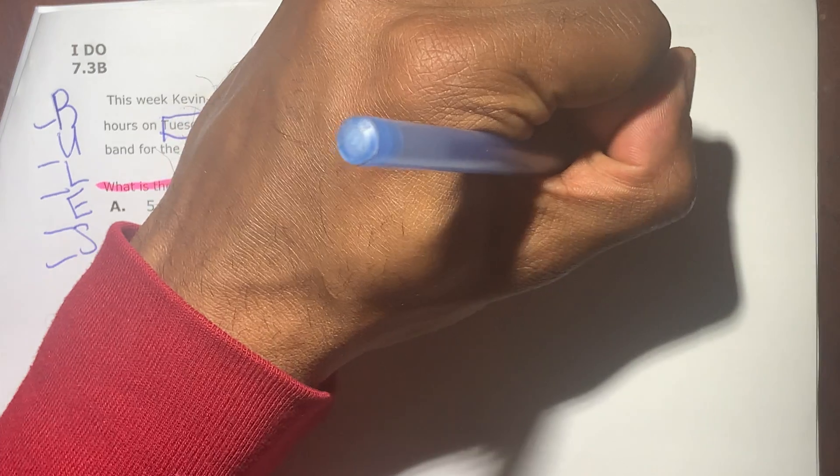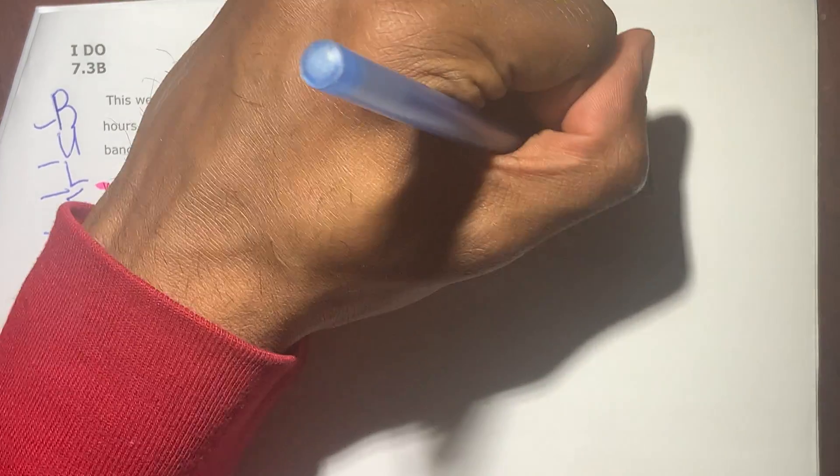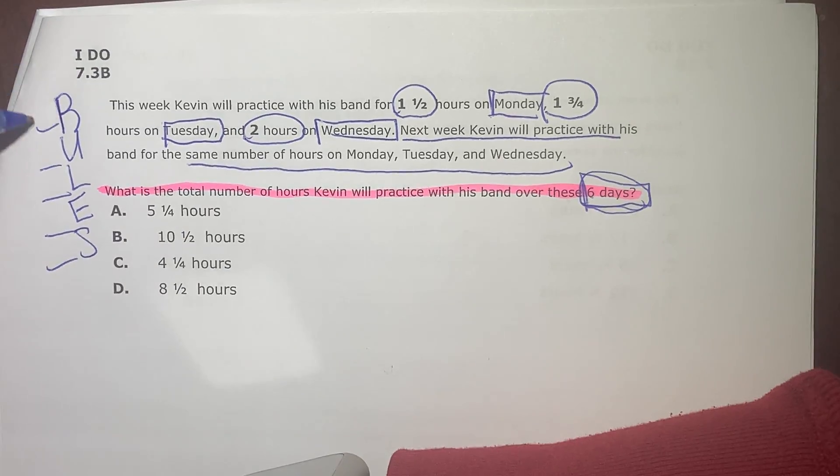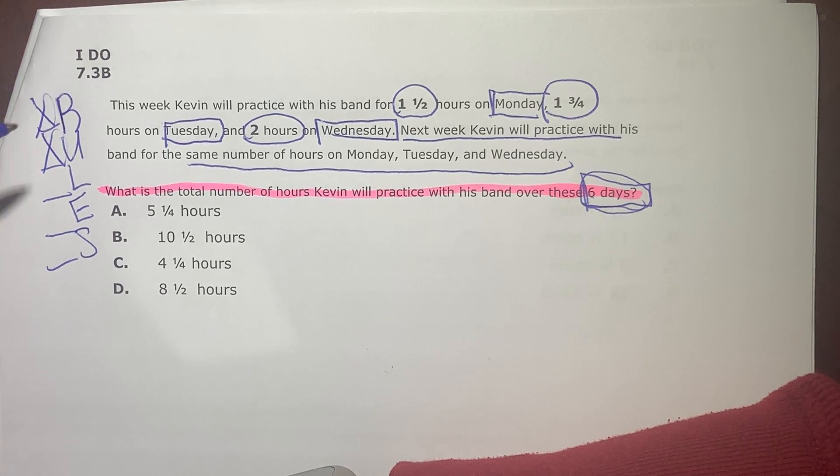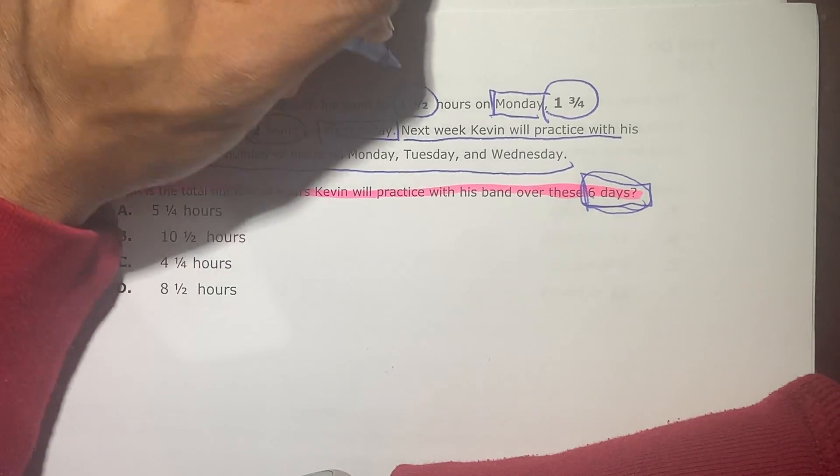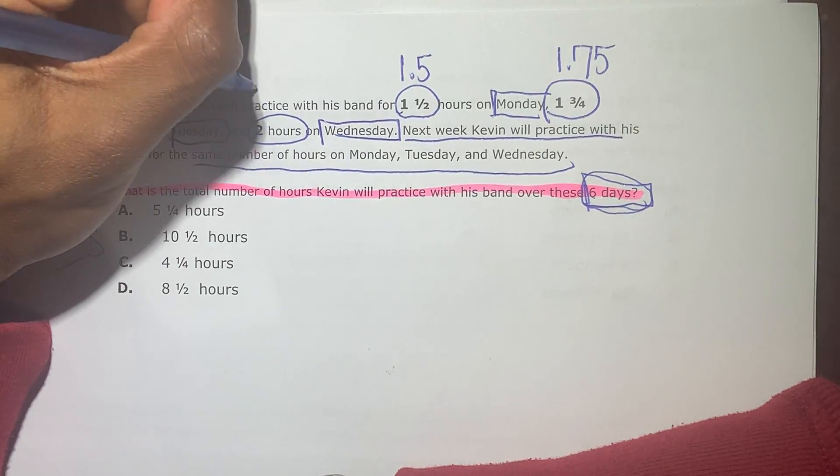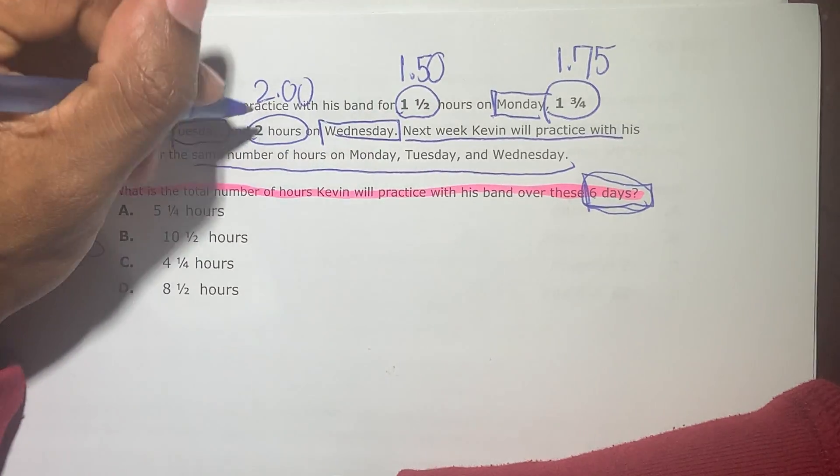So I did a similar problem like this earlier. Well, this should be a circle because this is actually a number. So I read the entire word problem. I highlighted the specific question or underlined it. So now I got to convert these to decimal: 1.5, 1.75, 2.0. Now these have to be combined.